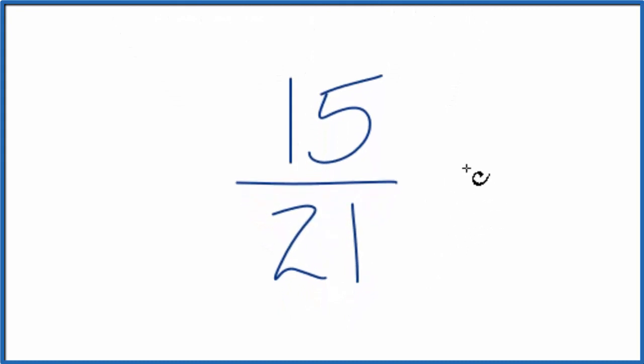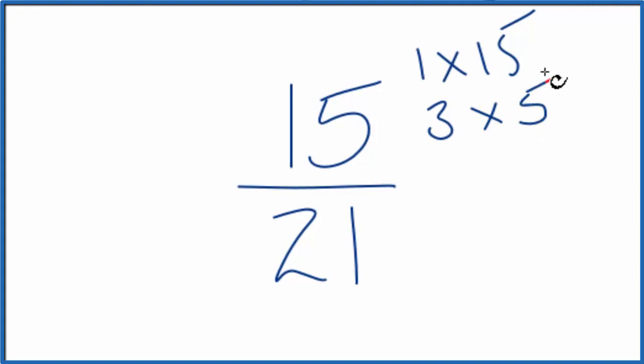To do that, we need to find the greatest common multiple. Let's list the multiples of 15 and then 21. 1 times 15 equals 15, 3 times 5. For 21, we'd have 1 times 21 and 3 times 7.